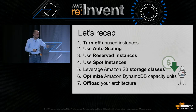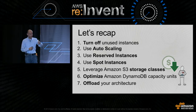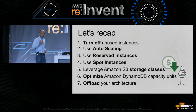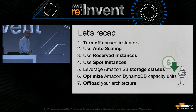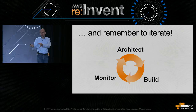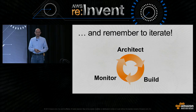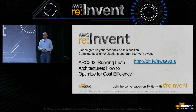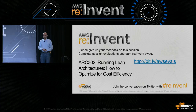Let's recap the seven strategies to improve your architecture and make it more cost efficient: turn off unused instances; automate turning off using autoscaling; use reserved instances; check out spot instances for even more savings; leverage different S3 storage classes; optimize your DynamoDB usage by being smart about capacity units; and find ways to offload pieces of your architecture into pre-built AWS services. Remember to iterate — you're no longer confined to hardware you bought and have to live with. You have a completely dynamic architecture where you can optimize all the time while you architect, build, and monitor. Thank you very much for coming here, and I hope this talk helped you save a lot of money.